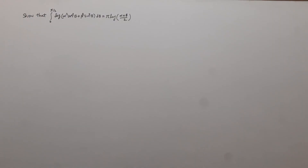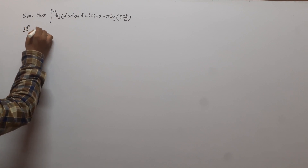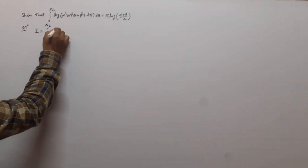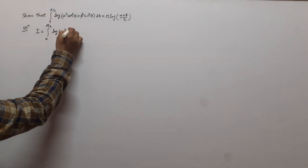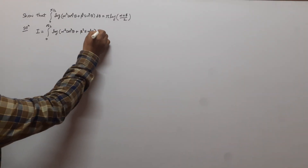In this question we have to evaluate the integral of log(α²cos²θ + β²sin²θ) between the limits 0 to π/2. We have to show that this is equal to π·log((α+β)/2). First we suppose that the given integral is equal to I, where I = ∫log(α²cos²θ + β²sin²θ)dθ.